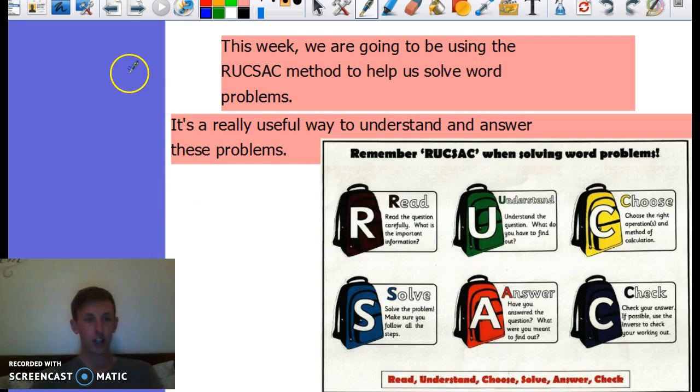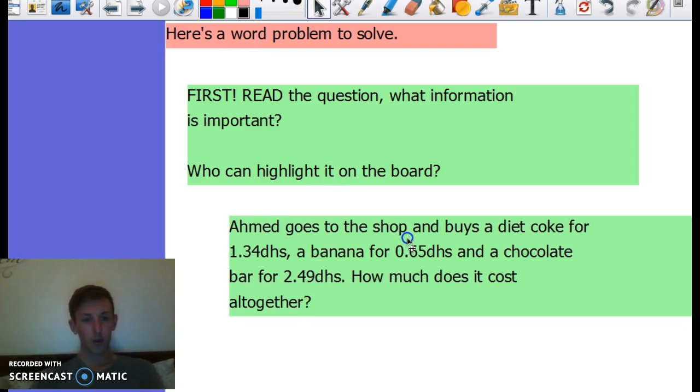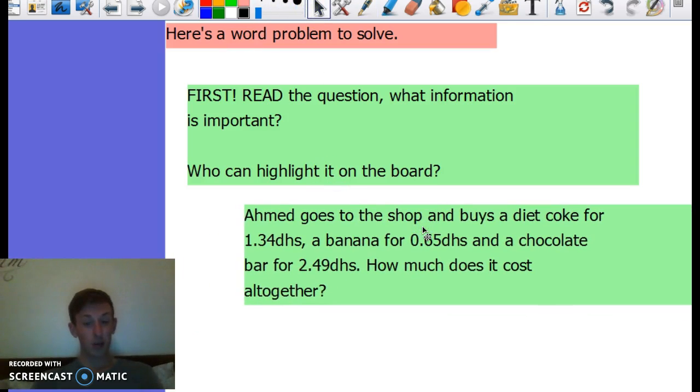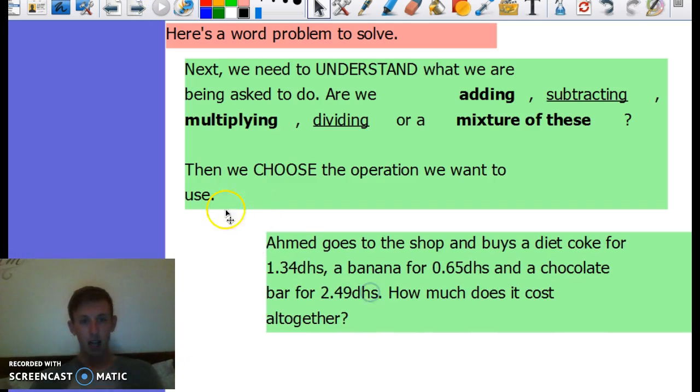Here's a word problem to solve. Ahmed goes to the shop and buys a Diet Coke for 1.34 dirhams, a banana for 0.65 dirhams, and a chocolate bar for 2.49 dirhams. How much does it cost altogether? So let's read it - we've done that. Next we need to understand what we're asked to do. Do we have to add, subtract, multiply, or divide, or even a mixture of these?